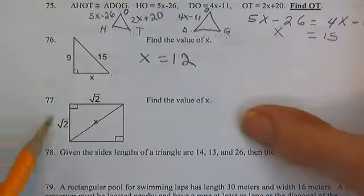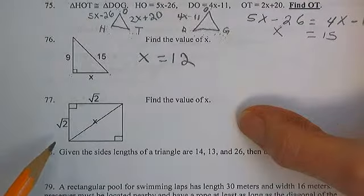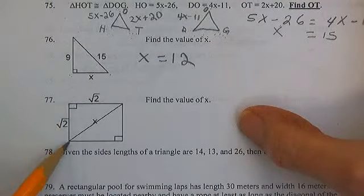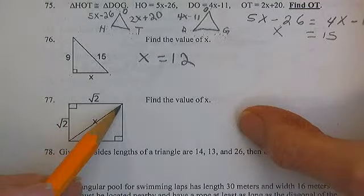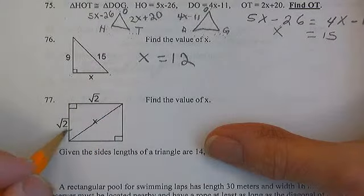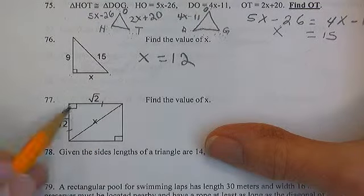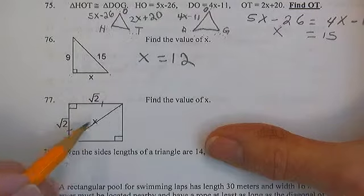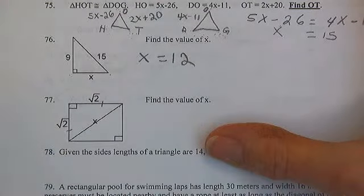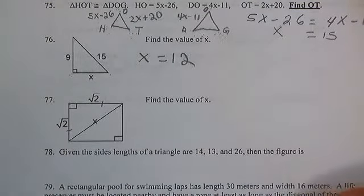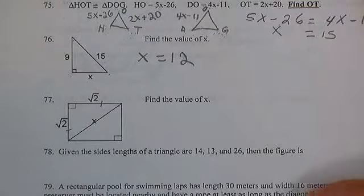Next problem. Square root of 2, square root of 2. So, what kind of triangle do we have here? We have an isosceles right triangle.